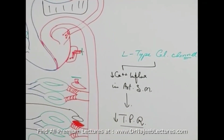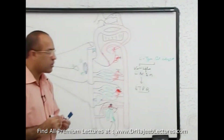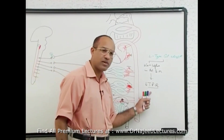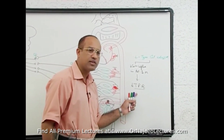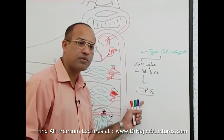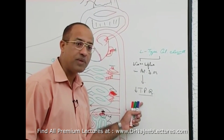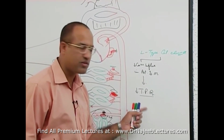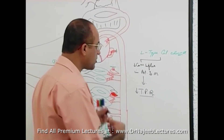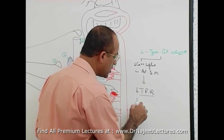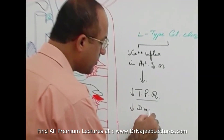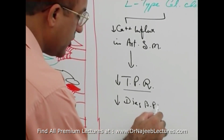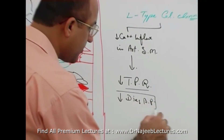When there is reduced total peripheral resistance, since diastolic blood pressure depends mainly on total peripheral resistance, that will eventually lead to reduced diastolic blood pressure.